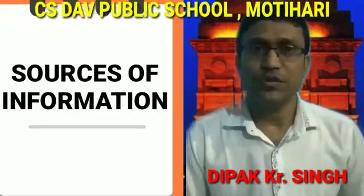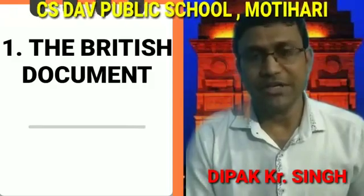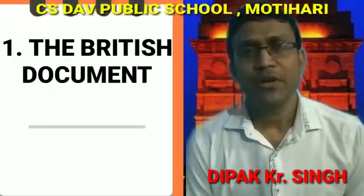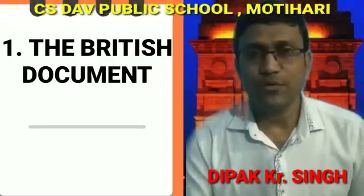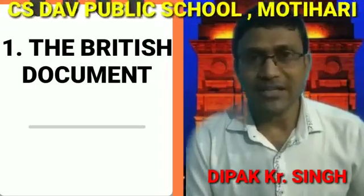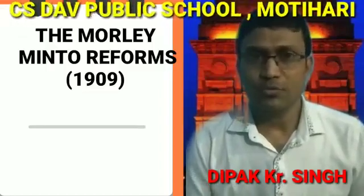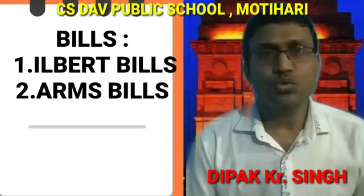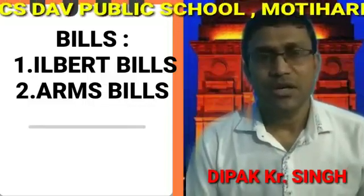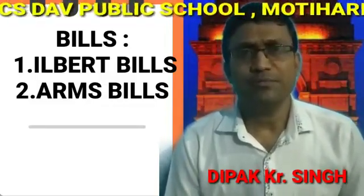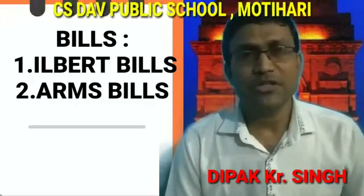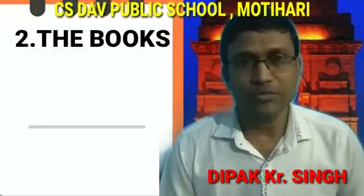The first source of information of the modern period is British documents. The British came here and ruled over us for almost 200 years, passing many bills and acts to make administrative reforms. Some prominent acts and reports include the Morley-Minto Reforms of 1909, the Simon Commission Report of 1929, the Government of India Act of 1935, and bills like the Ilbert Bill and the Arms Bill. Going through these documents gives us information about the administrative, social, political, and economic condition of the country.